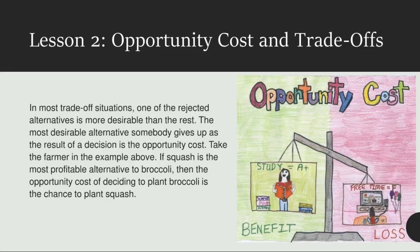A person who chooses to spend more time at work has less time to spend at home. A business that uses all of its factories to build chairs cannot build tables at the same time. A country that decides to produce more military goods has fewer resources for consumer goods. A person who chooses one alternative gives up other alternatives. The most desirable alternative given up is called the opportunity cost. For example, suppose you have to choose between sleeping late or getting up early to study for a test. The opportunity cost of extra study time is less sleep, and the opportunity cost of more sleep is less study time.